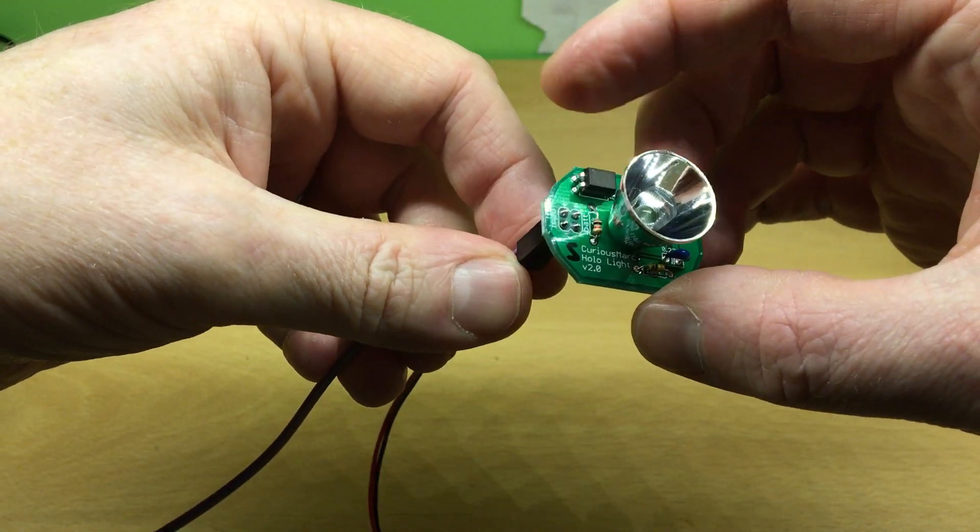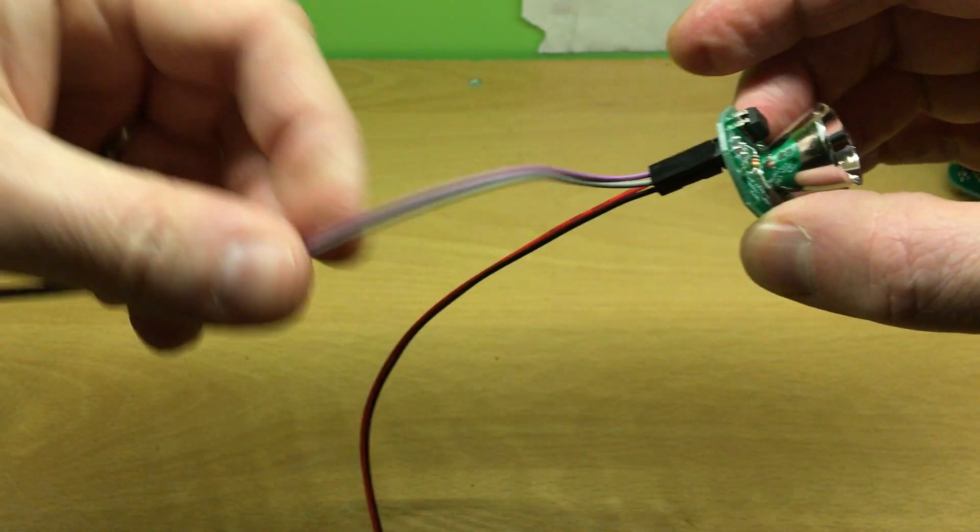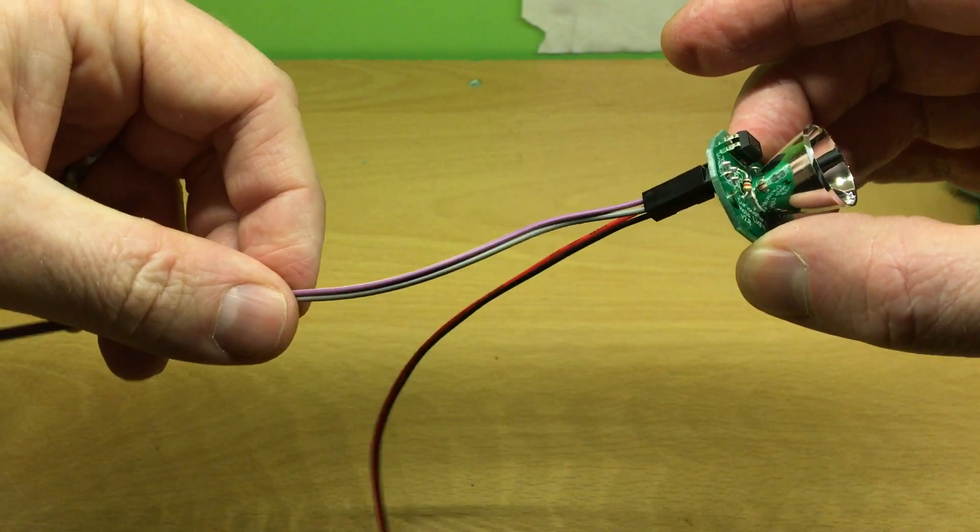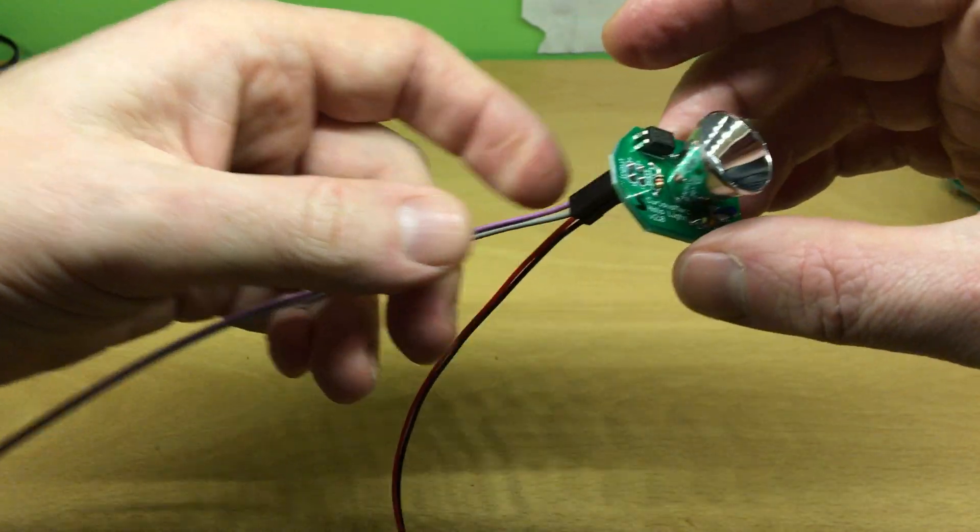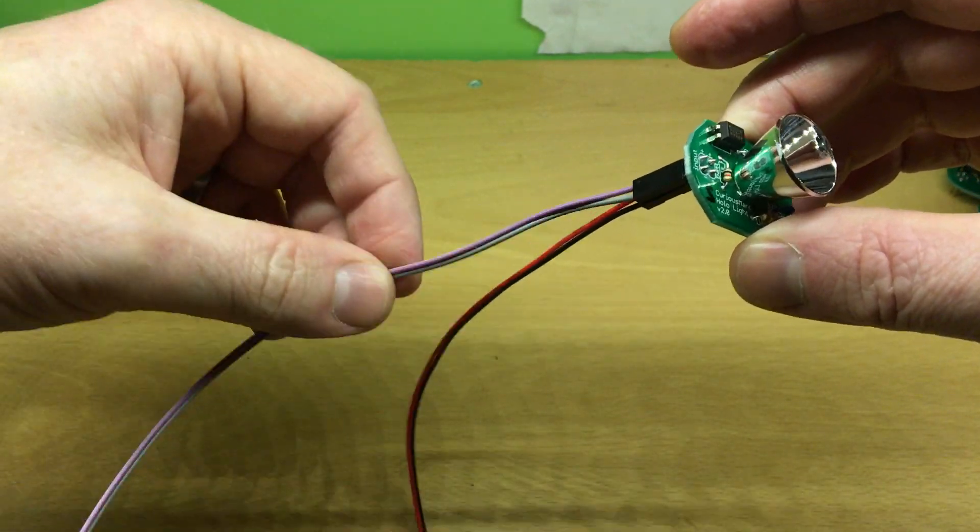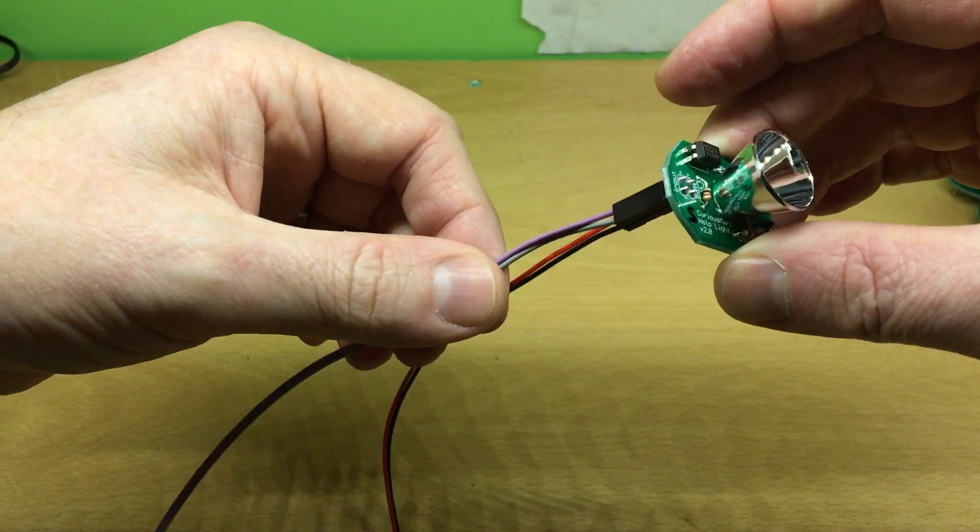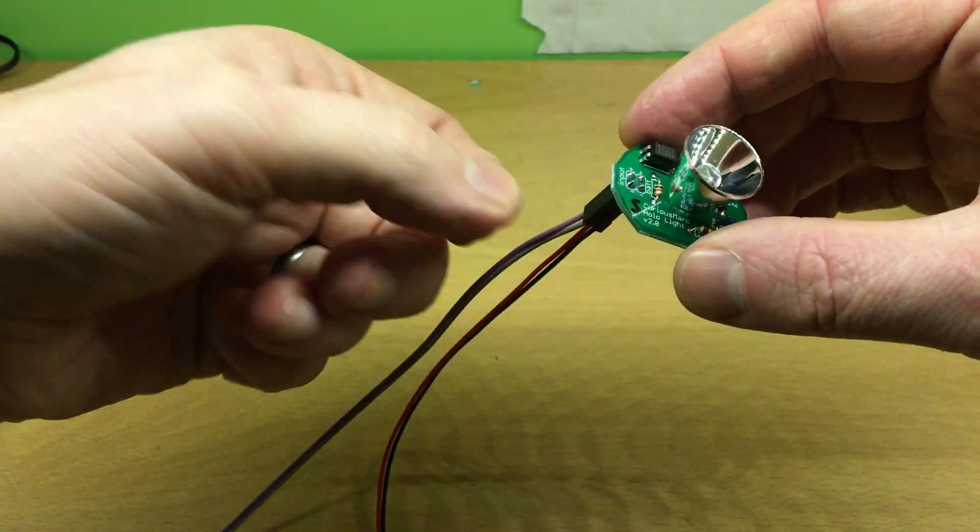Now what it's doing is there's an opto isolator in here, so that when this one is getting a signal, it will then tell the power to turn the main LED on. So it doesn't matter too much whether you get this the wrong way around because it'll just not work if it's the wrong way around. So just try both ways until it works.